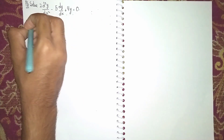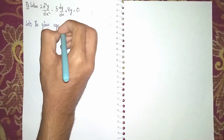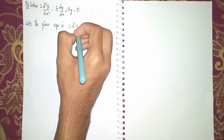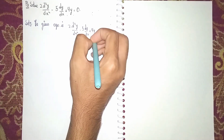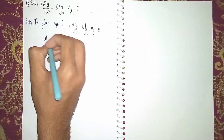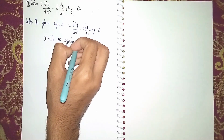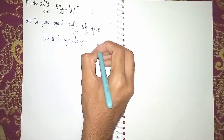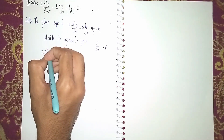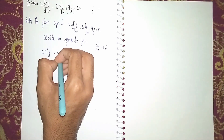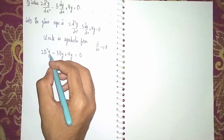The given equation is 2 into d squared y by dx squared minus 5 into dy by dx plus 4y is equal to 0. Write the given equation in symbolic form — instead of d by dx, I write capital D. It becomes 2D squared y minus 5Dy plus 4y is equal to 0.